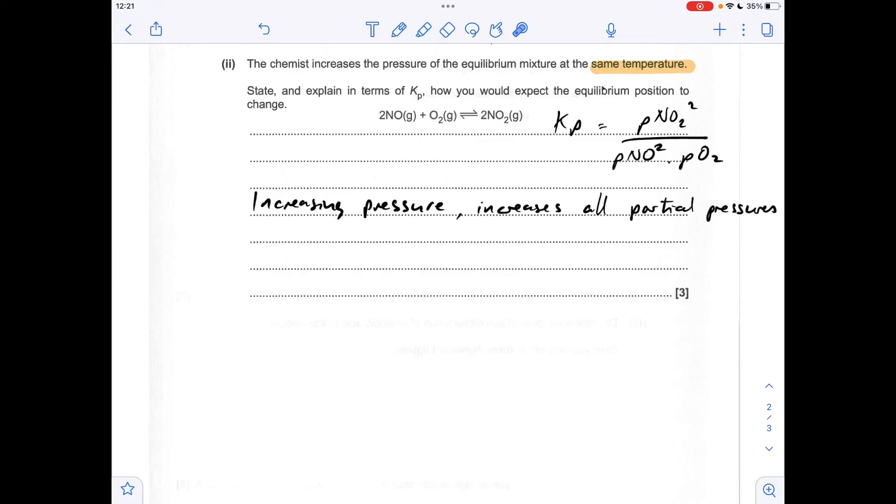So now we need to look at the powers within the Kp expression, so you can see we've got a total power of 2 on the top in this numerator term, but we've got a total power of 3 on the denominator term. So the denominator is going to be affected more than the numerator.